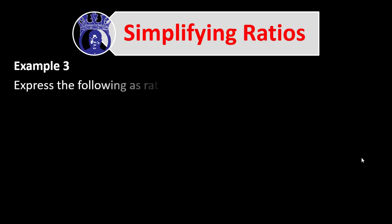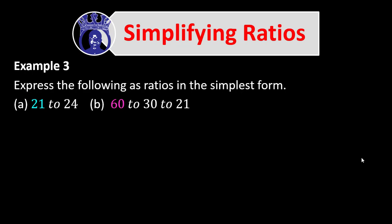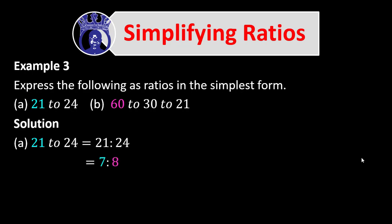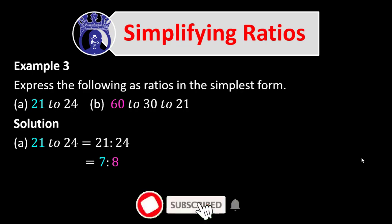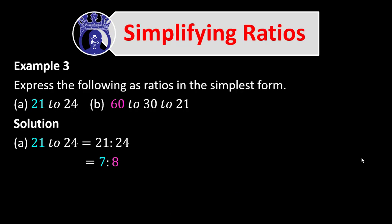Example 3: Express the following as ratios in the simplest form. A) 21 to 24, and B) 16 to 30 to 21. For part A, 21 to 24 is a two-term ratio. Dividing both parts by the HCF of 21 and 24, which is 3, simplifies it to 7 to 8.